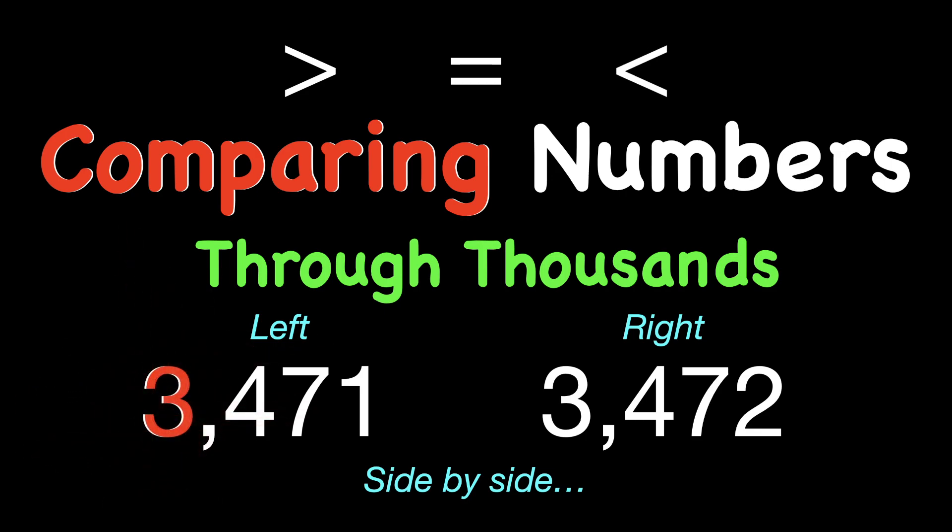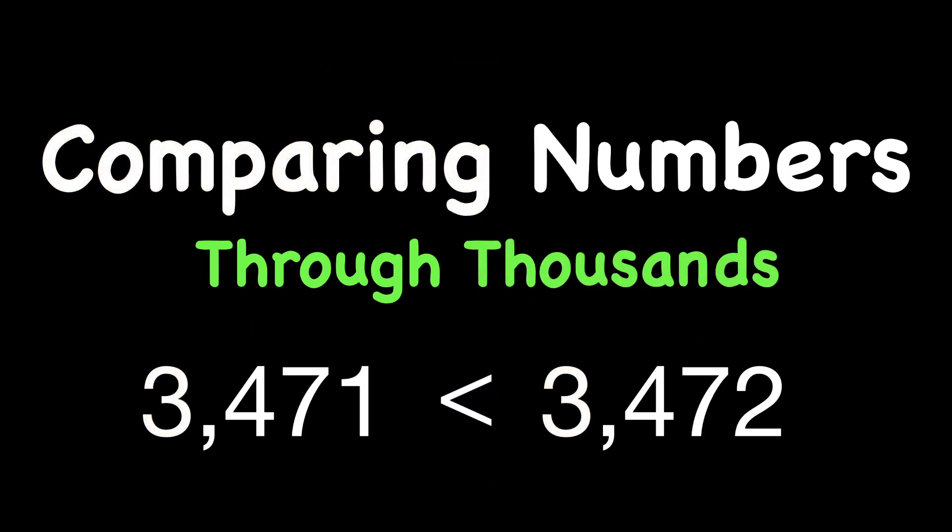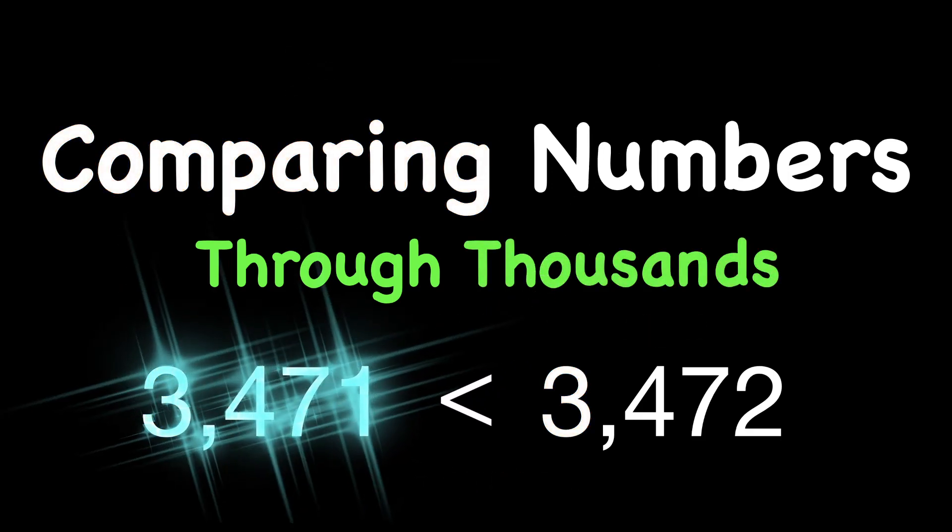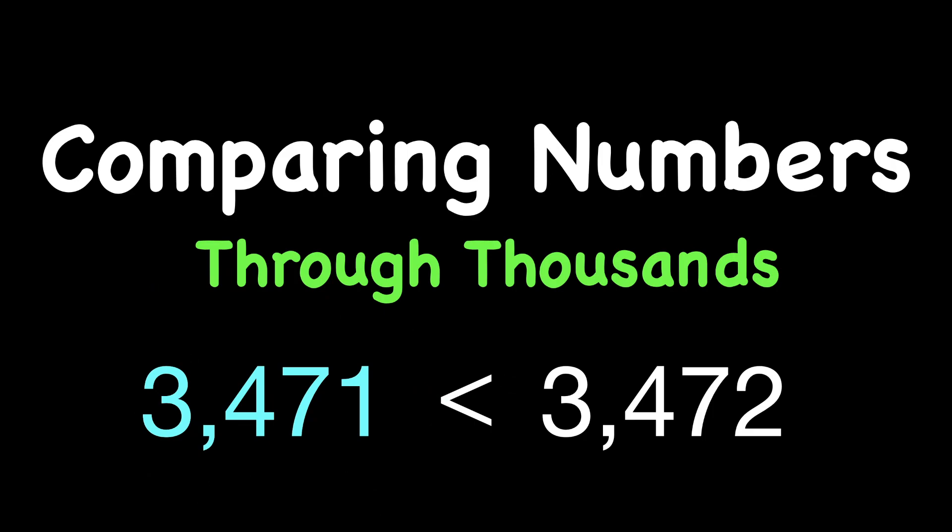And the thousands means in this case the two threes, they are in the thousands place value, which means that we're working with numbers that go up to the thousands place value today. This particular example you're looking at would read as 3,471 is less than 3,472.